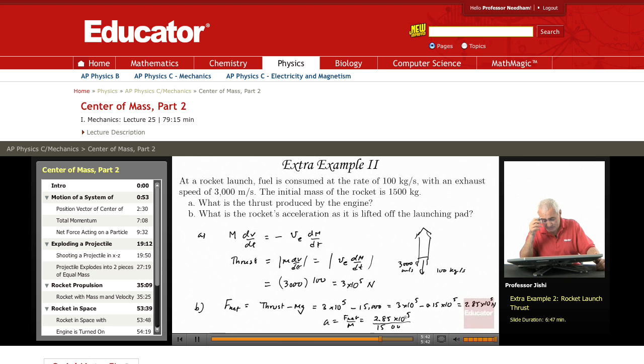That's 2.85 times 10 to the 5 over 1500. So this is 190 meters per second squared. This is the acceleration of the rocket as it's being just lifted off the launching pad. Here, 2.85, take a thousand from this, it becomes 2850, and the two zeros cancel, so it's 190 exactly. Alright.